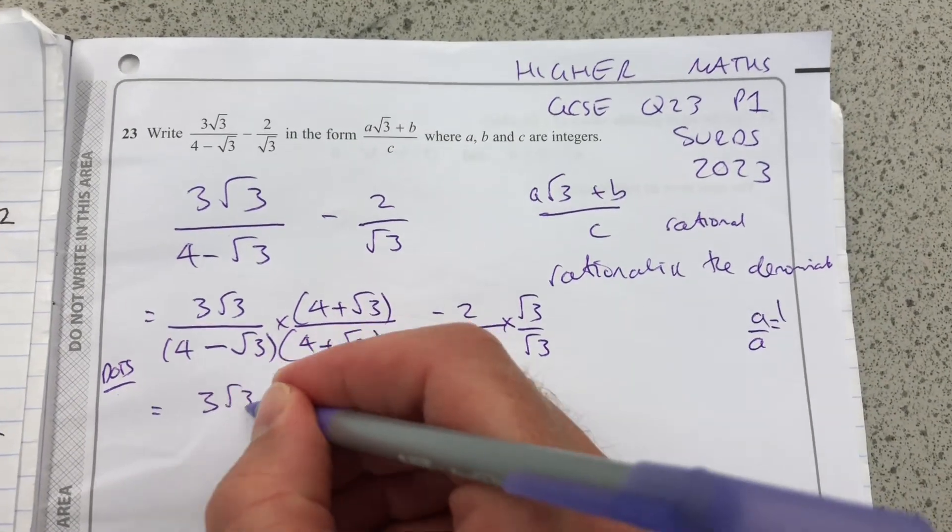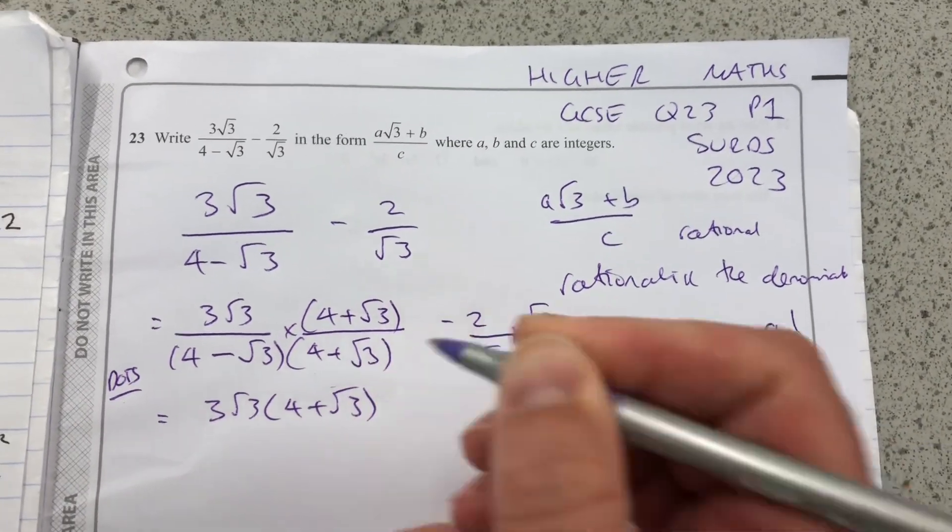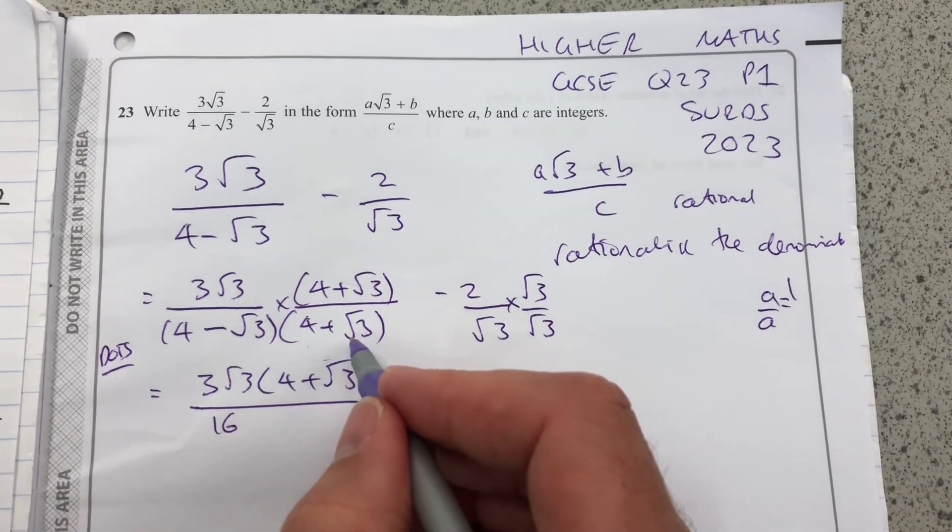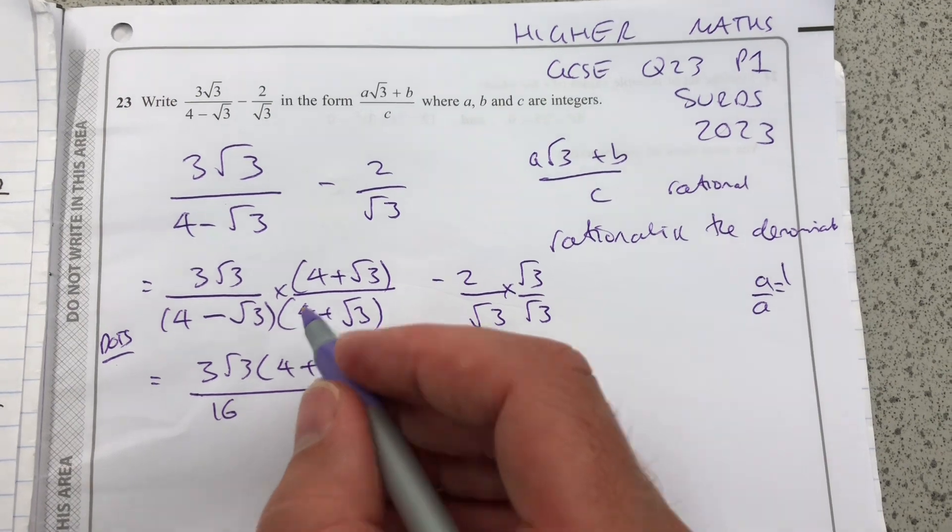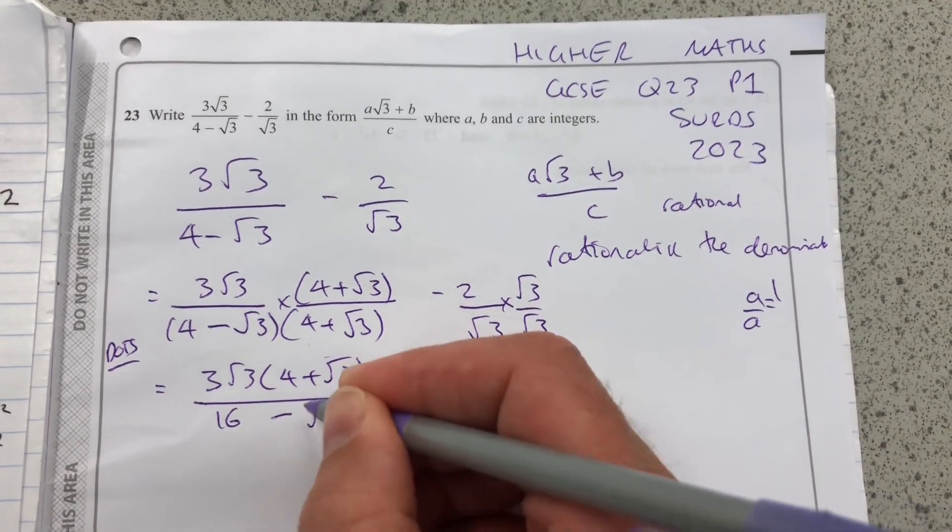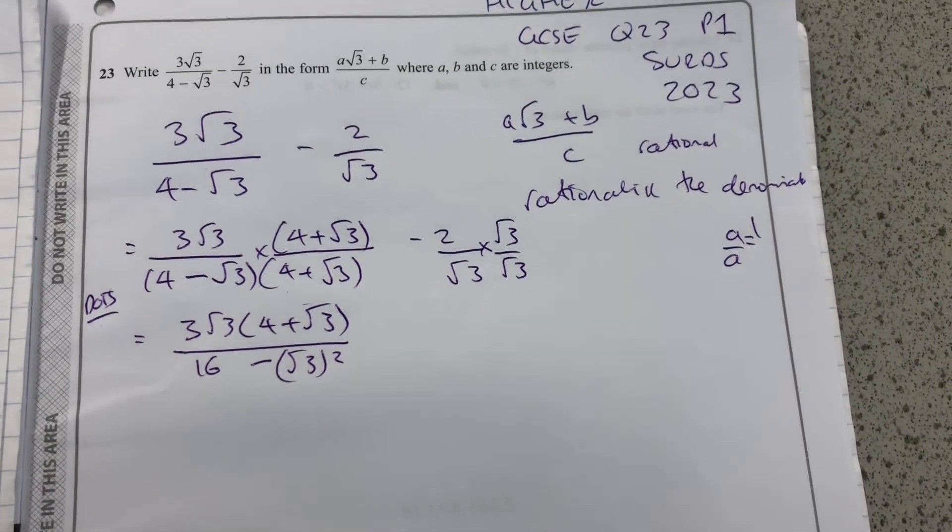So now I'm going to have 3 root 3 times 4 plus root 3. 4 times 4 is 16. 4 root 3 minus 4 root 3 is going to cancel. I'm left with minus root 3 squared. I'll leave that step in there just to show you.